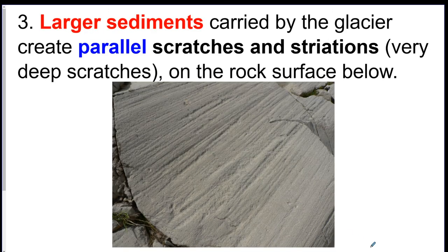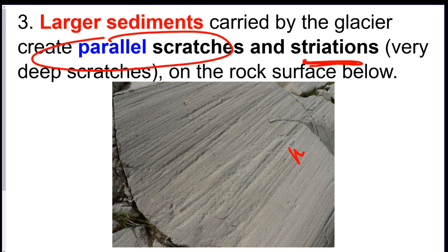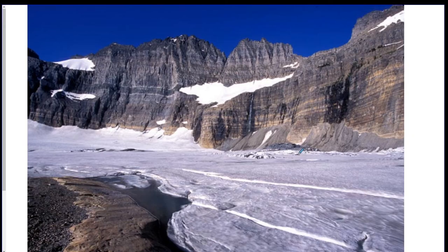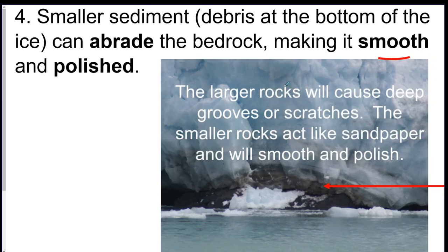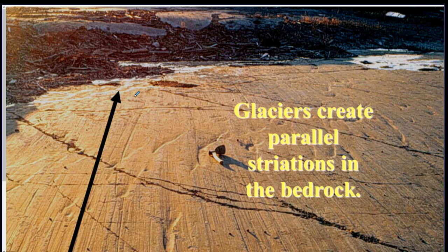Glaciers also leave scratch marks because the sediments drag along the ground — like if you wore cleats and dragged them in the mud, leaving tracks. These parallel scratches are called striations, and they leave the ground smooth and polished. The scratch marks also indicate which direction the glacier was moving, though you can't determine the exact direction from scratch marks alone.